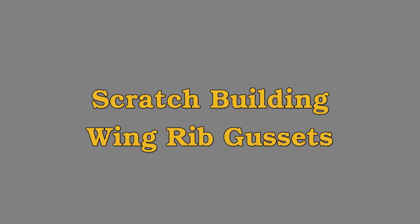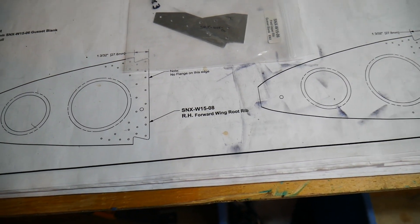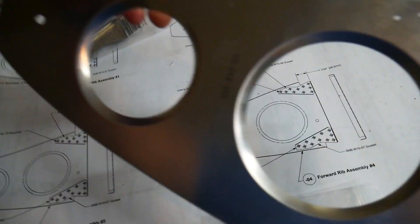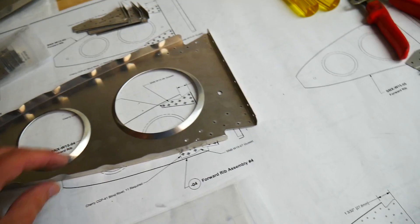Welcome back to the shop. Today we're going to scratch build forward rib gussets. The next step in the project is to start building out my wings. I'm going to start off with one of these forward ribs and we need to attach some gussets to it as doublers.